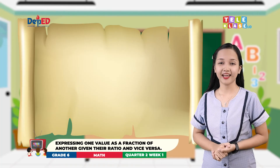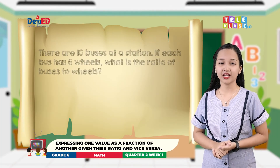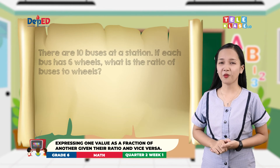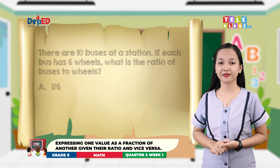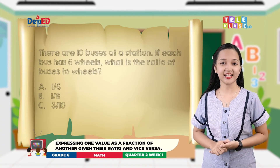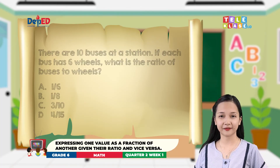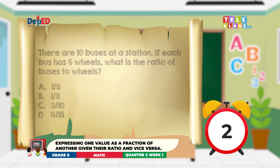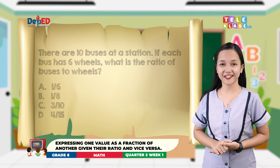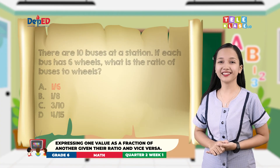Box four question: There are ten buses at a station. If each bus has six wheels, what is the ratio of buses to wheels? A, one-sixth; B, one-eighth; C, three-tenths; D, four-fifteenths. The answer is ten over sixty, or one-sixth.